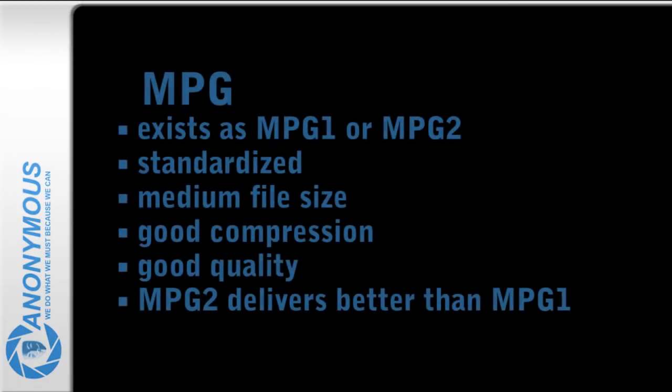First, we will look at the major container types or file formats. MPG has two versions: MPG1 and MPG2. It is a standardized format that uses a medium file size and possesses good compression, which delivers good quality. Naturally, MPG2 delivers better quality than MPG1.